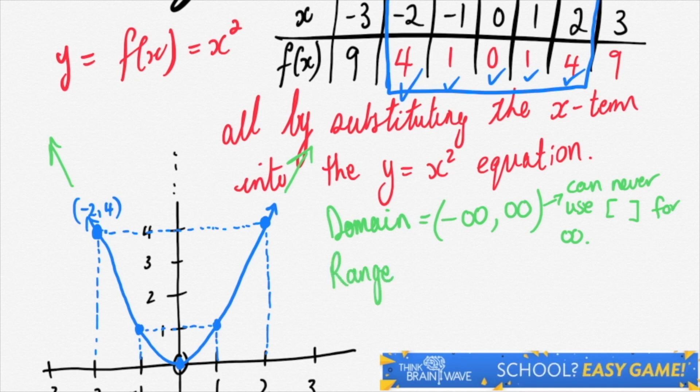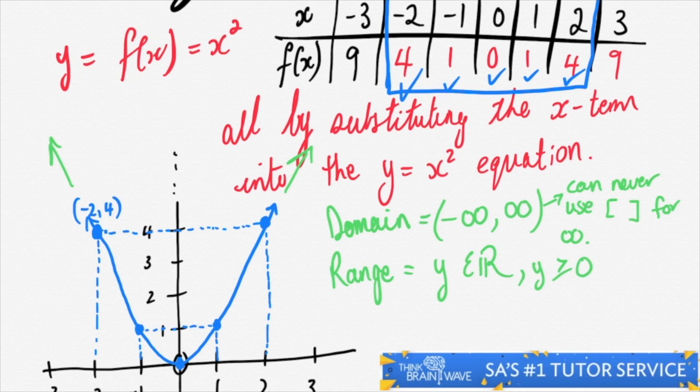Let's talk about the range. The range is everything in the y-axis. As you can see, we start at zero and we move positively upwards. We can say y is an element of all real numbers, and y is always going to be greater or equal to zero.